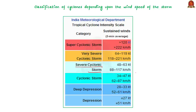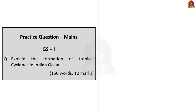Once the cyclone is formed, it moves and progresses 300 to 500 kilometers in a day to hit the coast or move along a coast. Once it reaches the coast or land, the cyclone dissipates or disappears because the water supply is cut off. This is how a cyclone forms. The displayed practice question will be discussed in the last session. Let's move on to the next discussion.